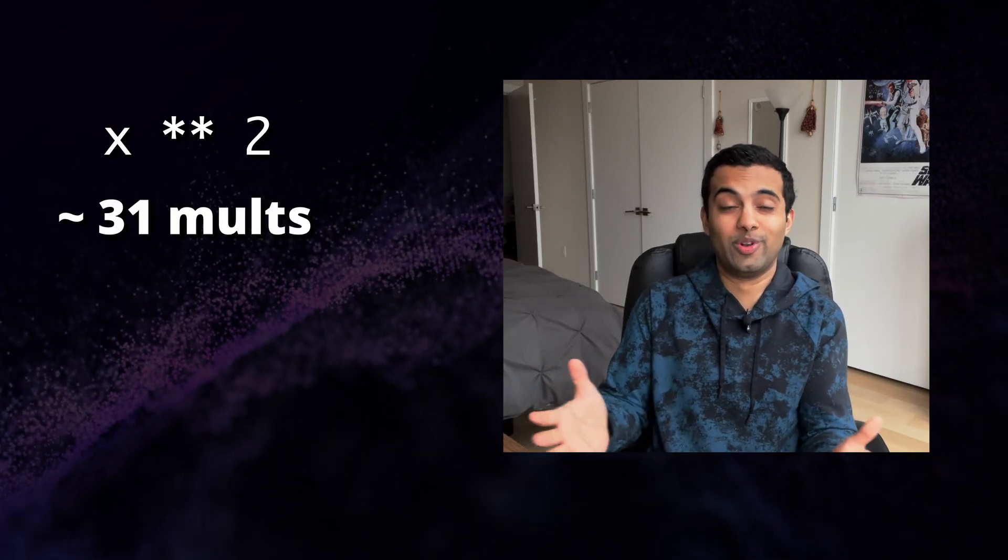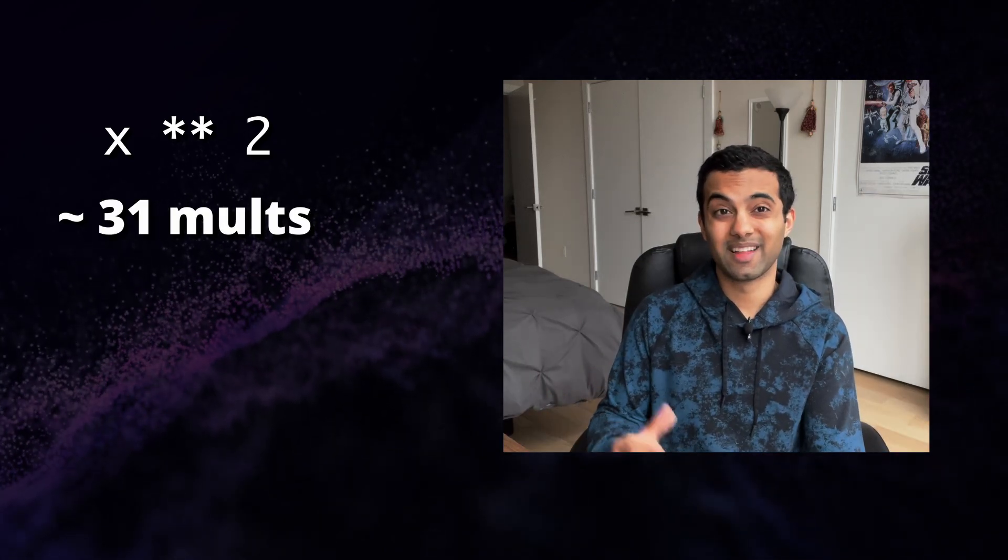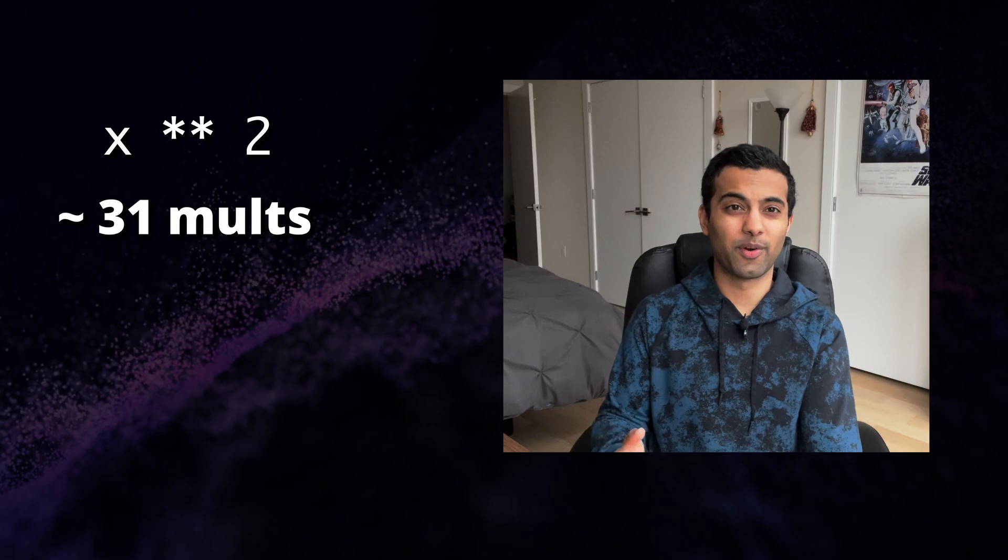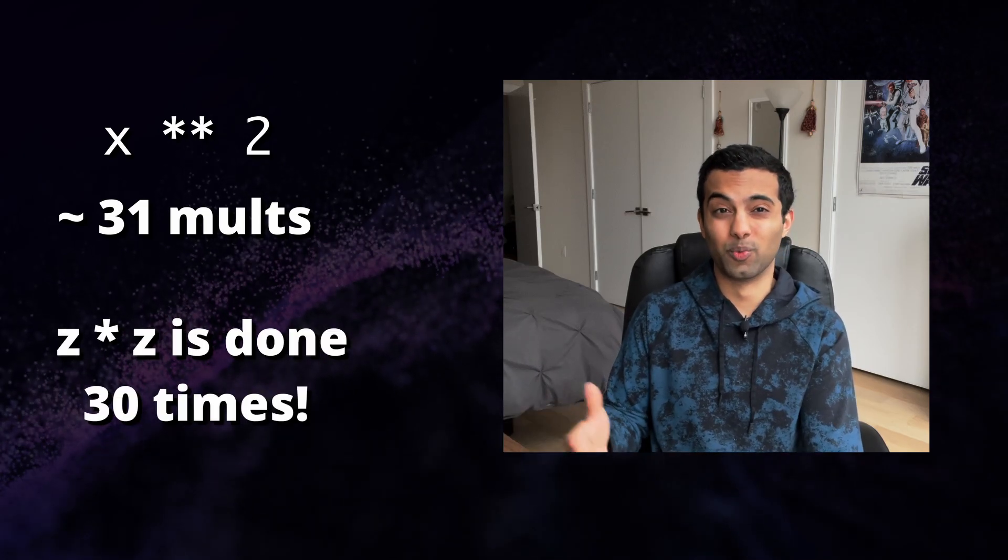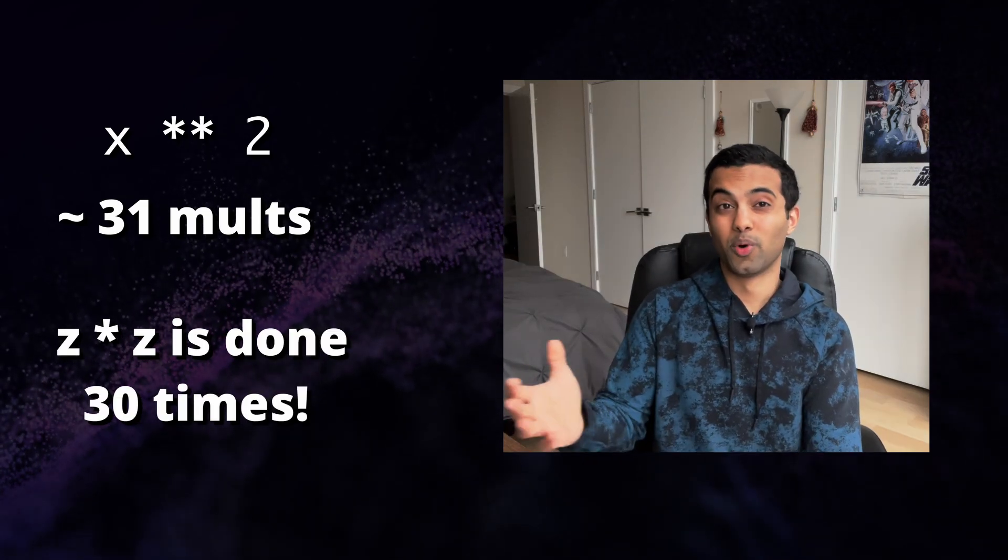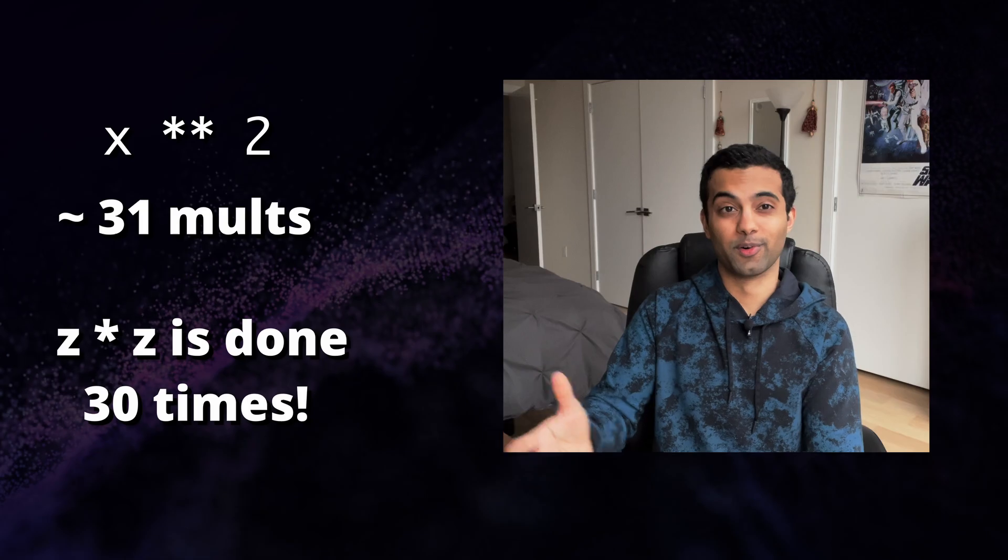If you have a small exponent such as 2, then you still end up doing 30 multiplications when you could instead just do 2. That's because we keep multiplying z by itself for every bit there is, and we're doing a lot of unnecessary work. This is what makes this algorithm really expensive for small exponents.